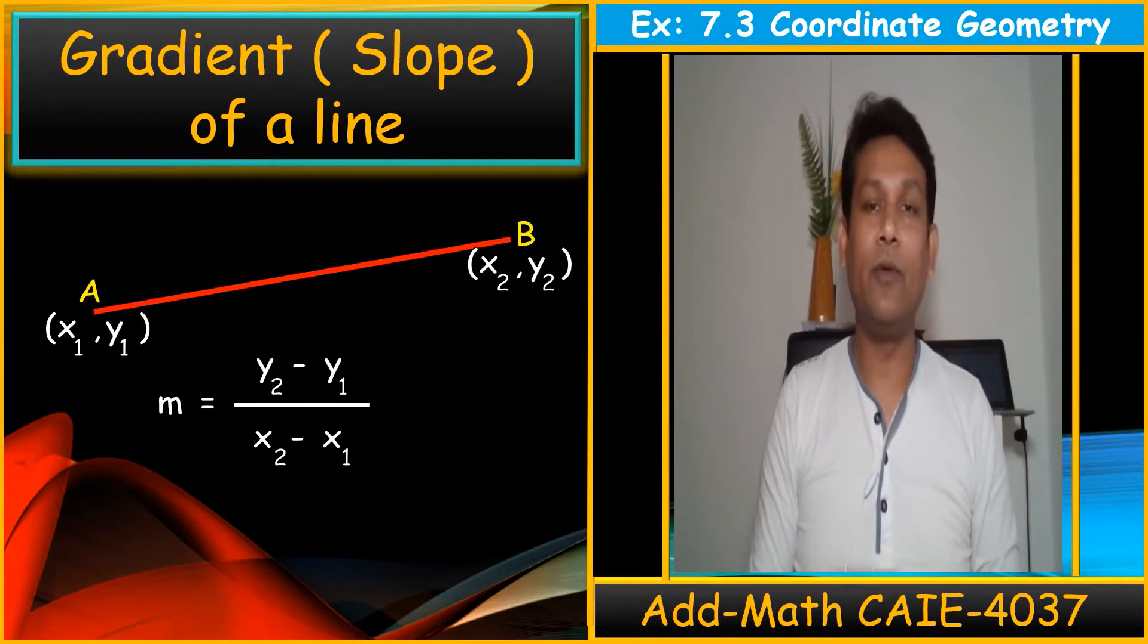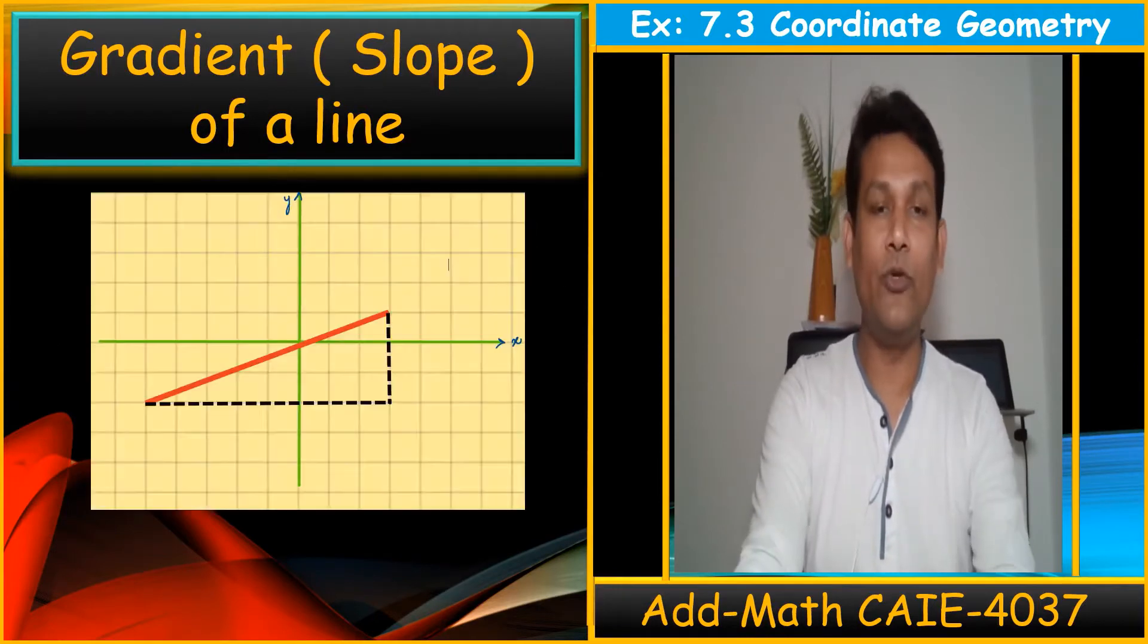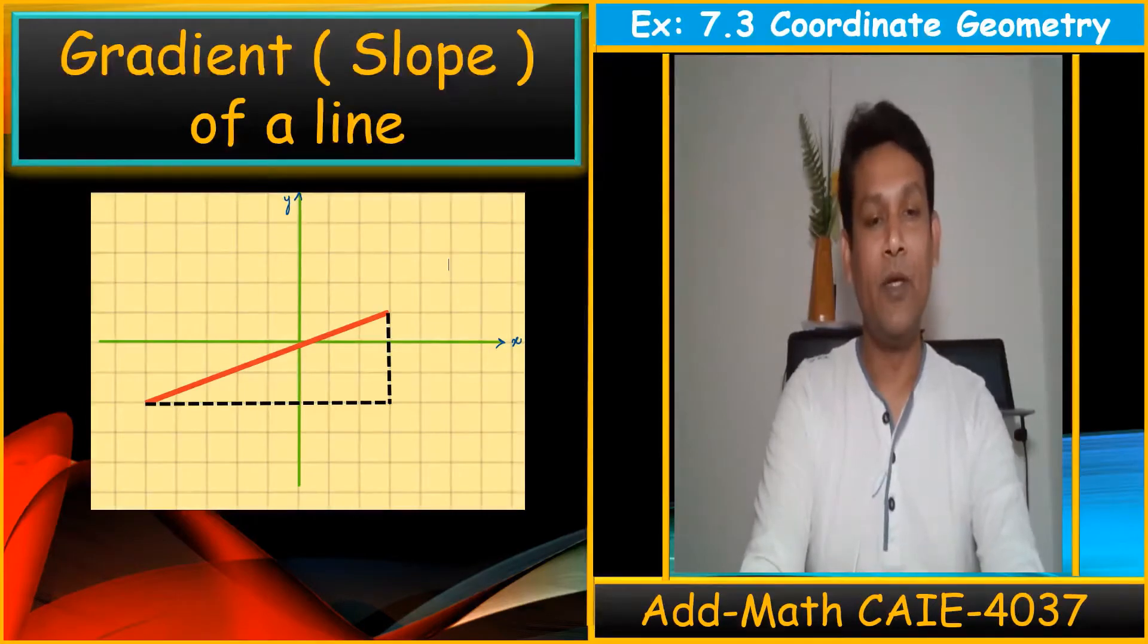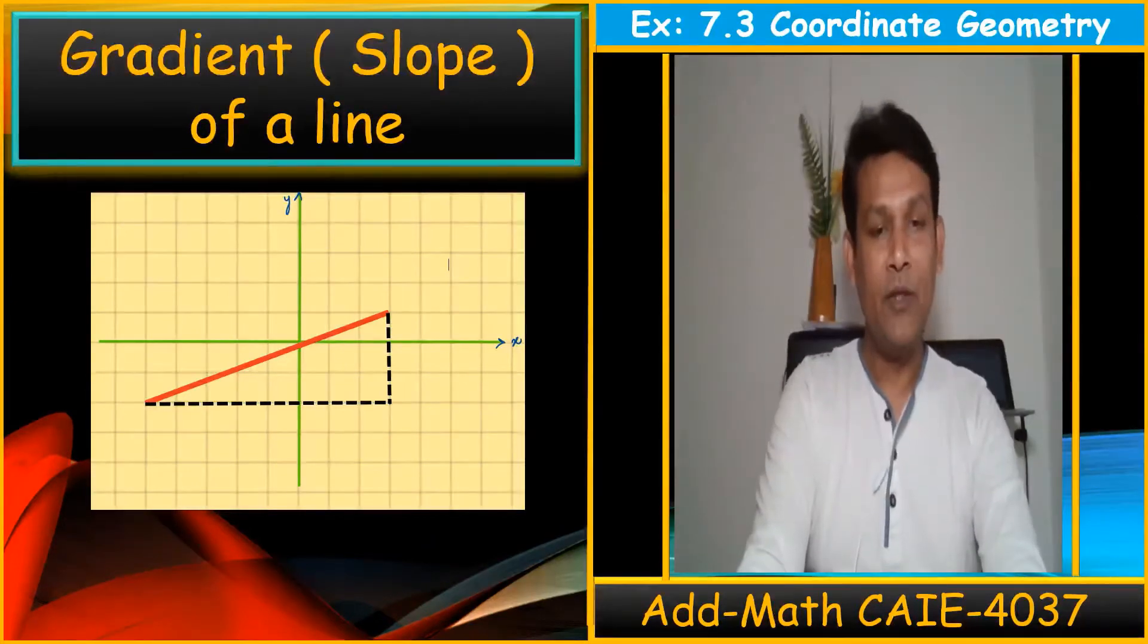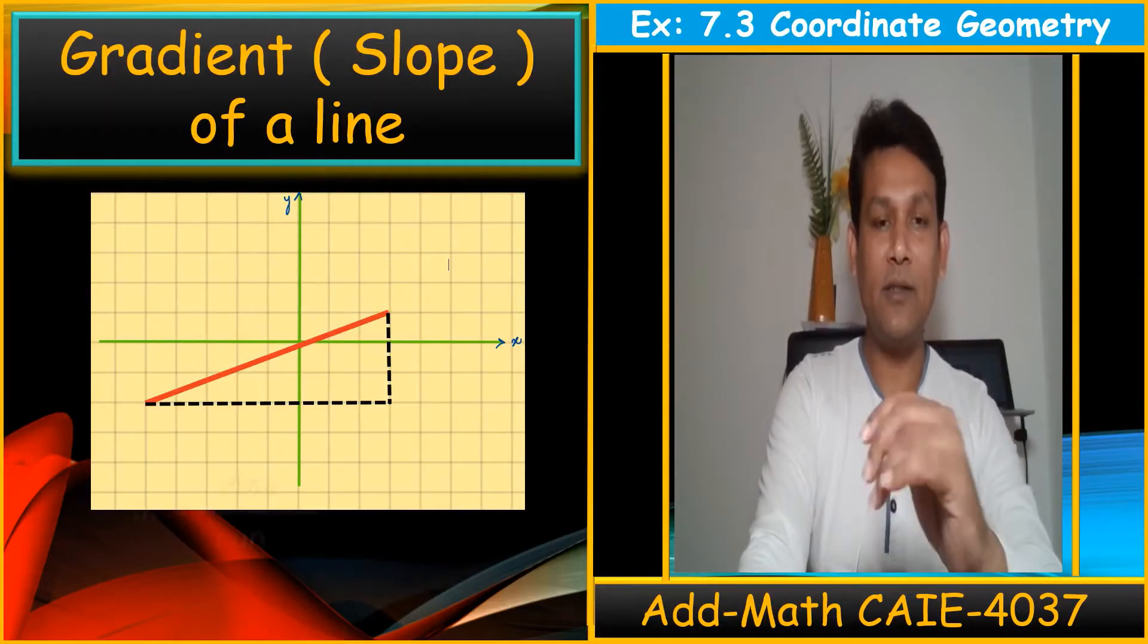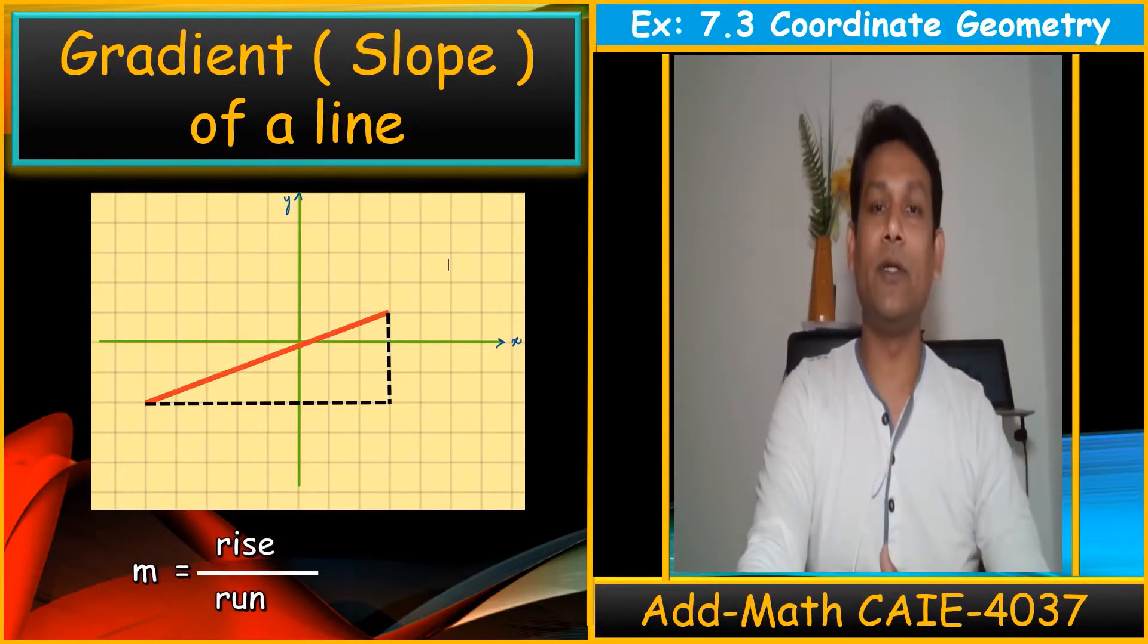We have one more formula that I want to introduce. You can see this example, this diagram. In this line, the red line, I have done a right angle triangle basically. How many steps do you have vertically? This rise upon run. The gradient is also equals to rise upon run.